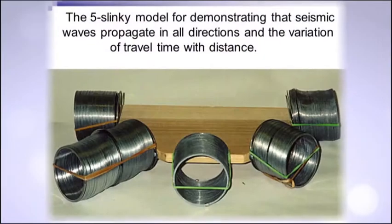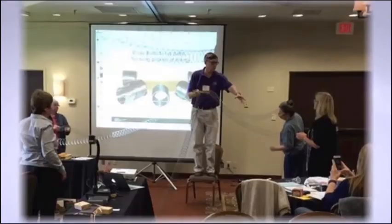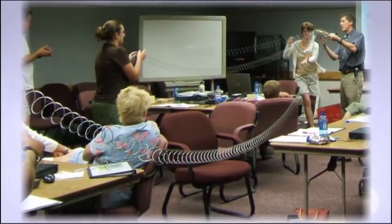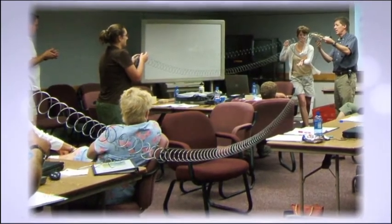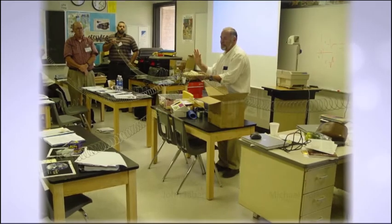What I like about the fly-slinky model is it allows you to really see very visually that energy goes out in all directions when you have an earthquake. Usually teachers start with a slinky and there's only something going one direction. That's a nice intermediary between the slinky, which shows sort of energy in a ray, and the idea of wave fronts that we show on other resources like seismic waves. So it's a good transitional model for students to see and think about in class.